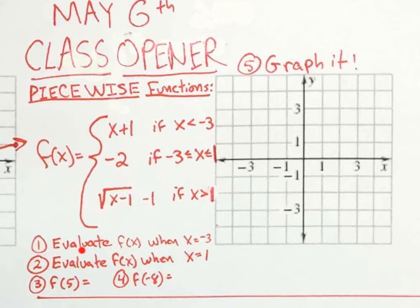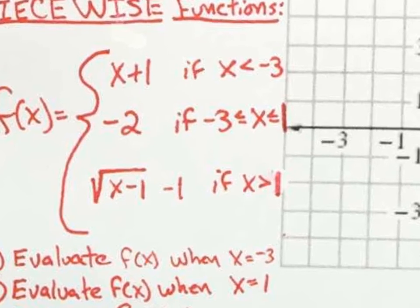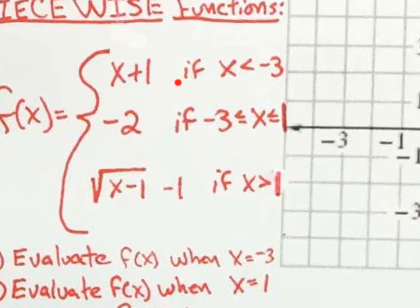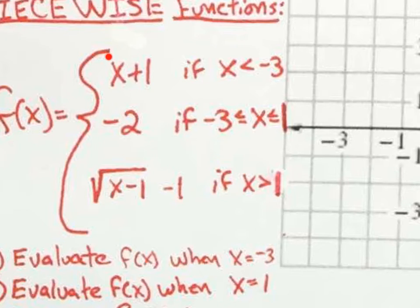Number one says evaluate f of x when x equals negative three. Remember, evaluate means plug it in and simplify. So the question is where are we going to plug in negative three? You have to look at your restrictions. You're going to plug it into the first piece if your x value is less than negative three, and negative three is not less than negative three — so it can't be that one.